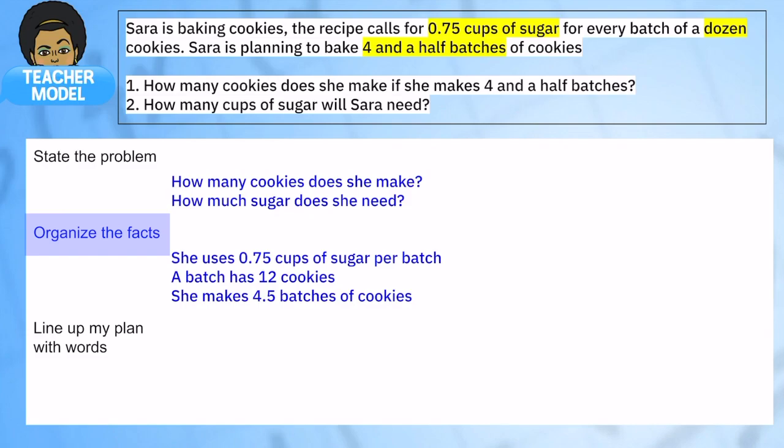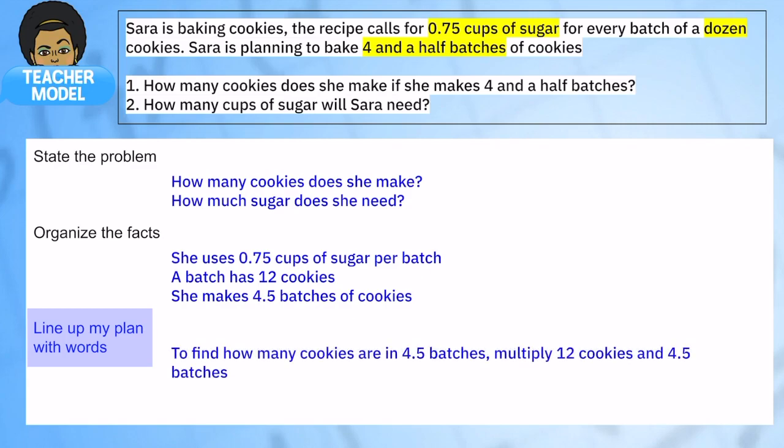And so what is my plan? There's two things I'm looking for here. First, I want to find out how many cookies she has. So I'm going to take the four and five tenths batches and I'm going to multiply the 12 cookies in every batch times 4.5 batches. Because I know there's 12 in every single one. And to figure out how much sugar she needs, I'm going to take the four and five tenths batches and I'm going to multiply that by 75 hundredths of a cup of sugar. So I'm going to do two multiplication problems. So let's see it in action.